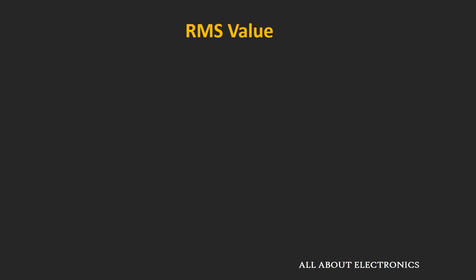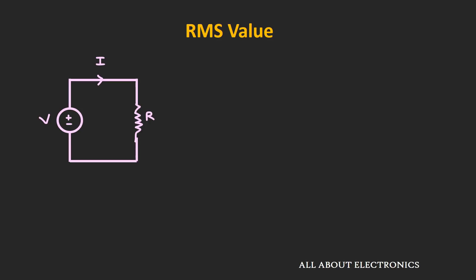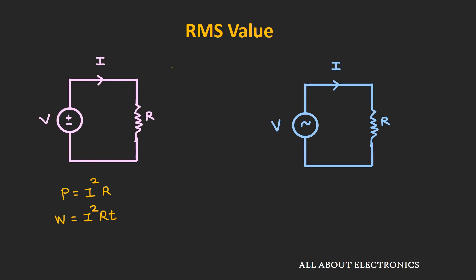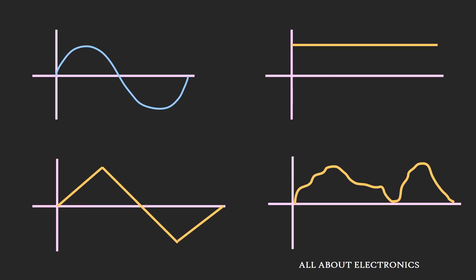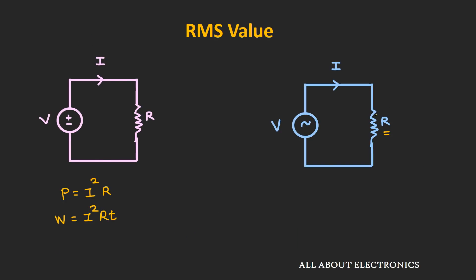This RMS value is basically related to the amount of heat being produced in a particular circuit. Let's say we have one DC voltage source of value V connected to one resistor R, and DC current I is flowing through that circuit. The power dissipated across resistor R will be I²×R, and the heat generated will be I²×R×T. Now, if we replace this voltage source by an AC voltage source, then this RMS value represents the effective value of the AC source which will produce the same amount of heat across resistor R. So a DC source of 20V and an AC source with RMS value of 20V will both produce the same amount of heat.